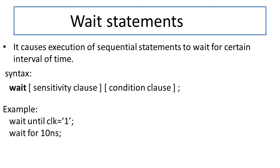For example, the first statement is: wait until clock equals 1. That means until the clock becomes equal to 1, all operations will be suspended. Since a clock pulse can be positive or negative — transitioning from 0 to 1 or 1 to 0 — the wait statement is useful here. The second example is: wait for 10 seconds, meaning operations are suspended for the first 10 seconds.